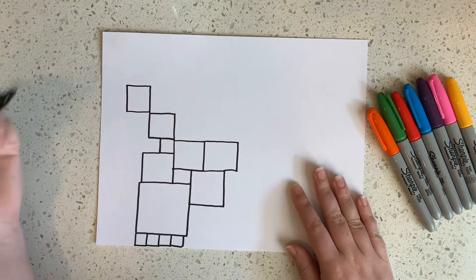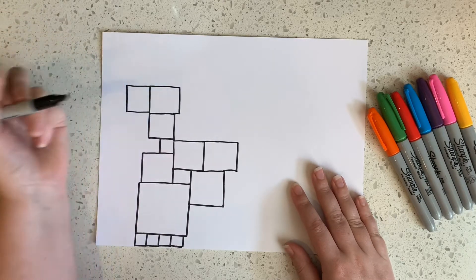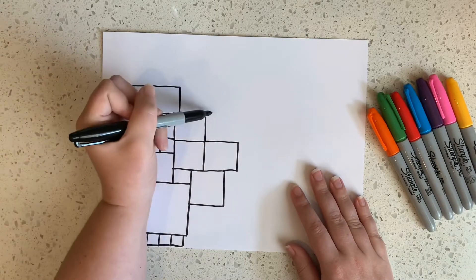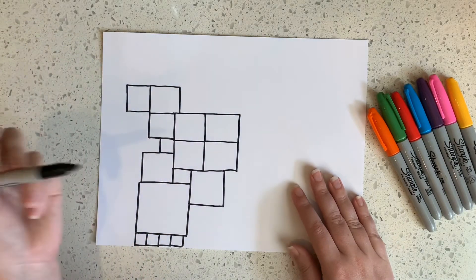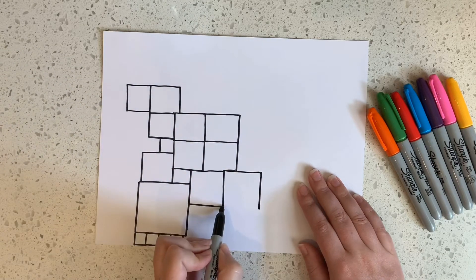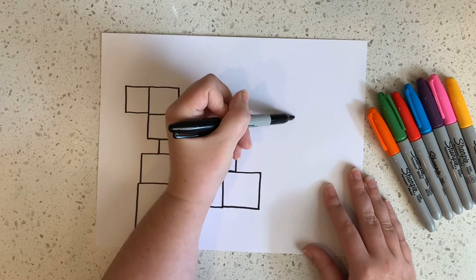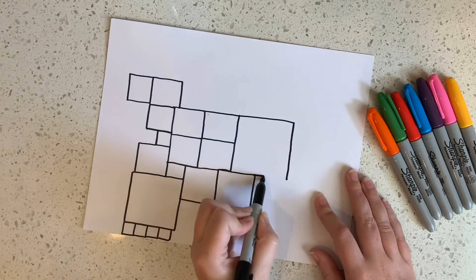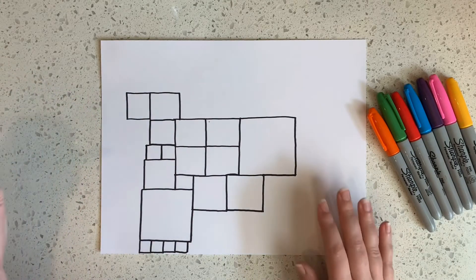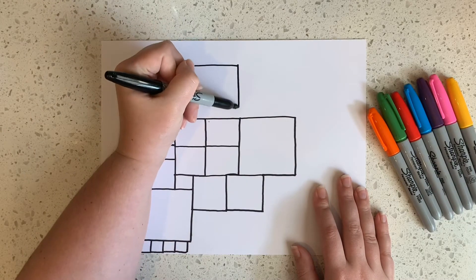13, 14, 15, 16, 17, big square, 18, 19, 20.